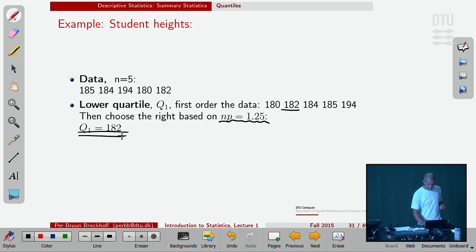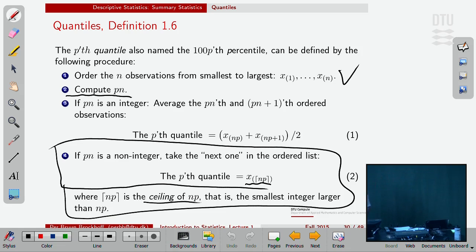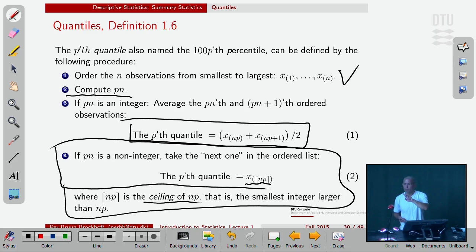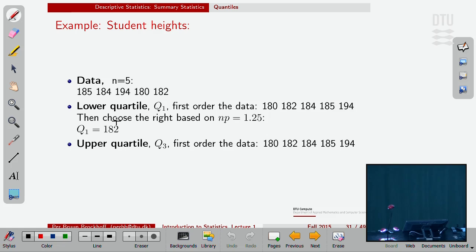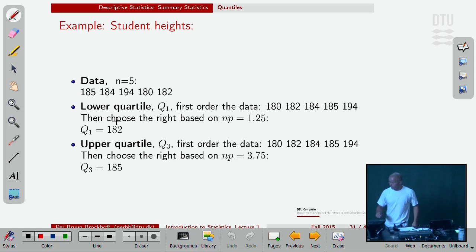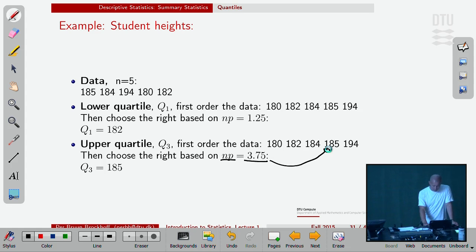If we get an integer, like when I have six observations and I want to find the median like we did before, six observations, P is 0.5, N times 0.5, that would be three. What do I do then? Then I take the average of number three and number four. I take the average of number whatever and the next one. So if it's an integer, I have to average them. If it's not an integer, I take the next one. That's the definition we give here in the book. And I've used it here for the Q1. Now I use it for the upper, the 75% quantile. I take five, multiply by 0.75, I get 3.75. That will take me up to take the fourth one. So the upper quantile is 185.